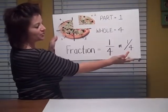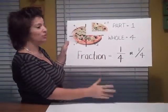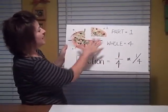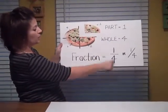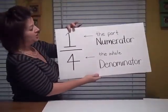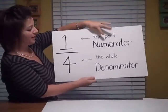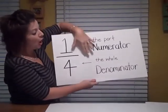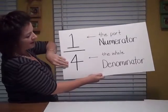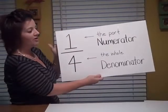Sometimes you see fractions written with the line going sideways — both ways are the same. So when we look at our piece of pizza, the fraction is one-fourth. The top of the fraction, or the one, is called the numerator. The bottom part — the whole — is called the denominator. So the top part is the numerator and the bottom part is the denominator.